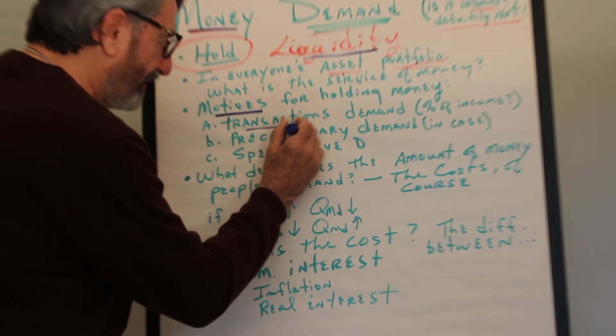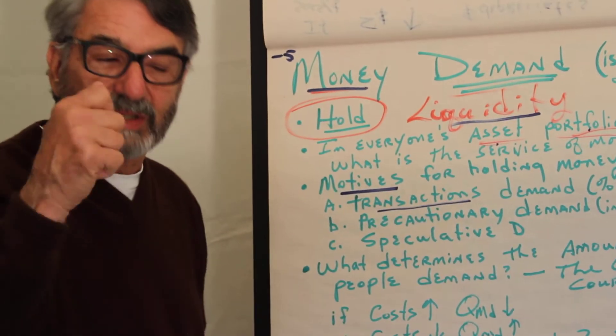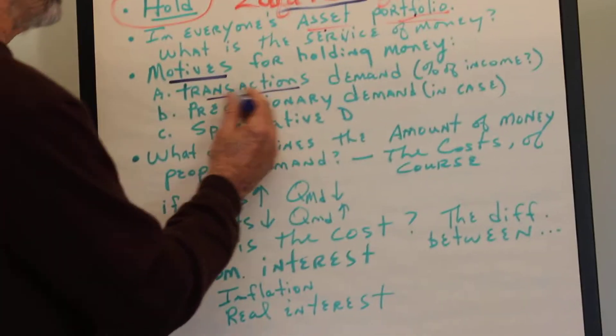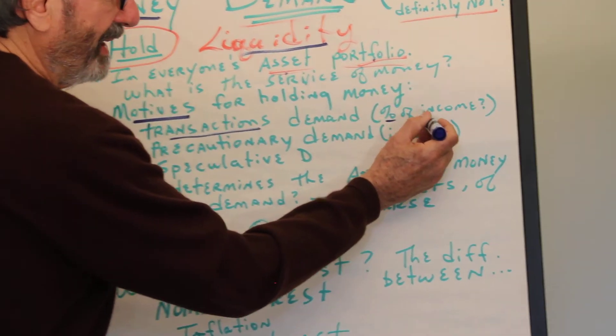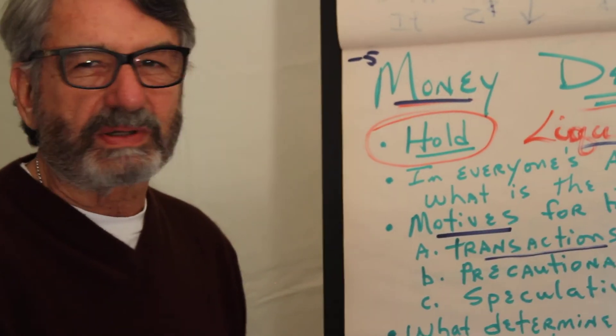Well, you have to make transactions. So that's the first reason. Everybody when they make transactions has to have the money so that they can make the transactions. That's the transactions demand. Normally people think that transactions demand for money is some percentage of income.